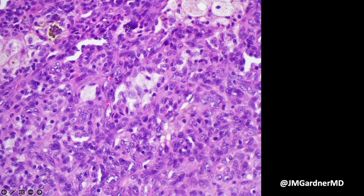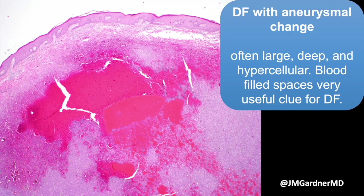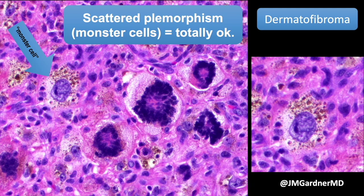A closer look shows multinucleated cells, foam cells, and hemosiderin, and look at how plump those cells are — big, fat, almost oval to round in this case. Here's an example with really dramatic aneurysmal change. Like cellular DFs, aneurysmal DFs tend to be larger, deeper, and have a bit more tendency to persist or recur; in fact, cellular and aneurysmal DF often coexist in the same lesion. There's nice epidermal hyperplasia with tabling and a good Grenz zone.